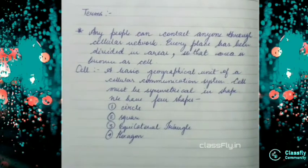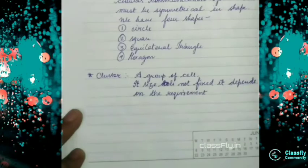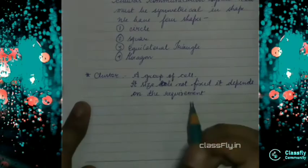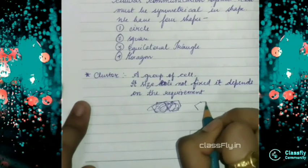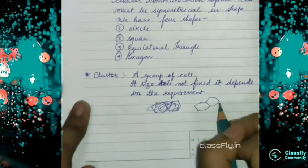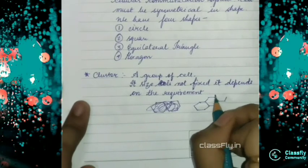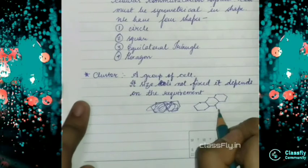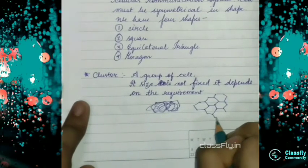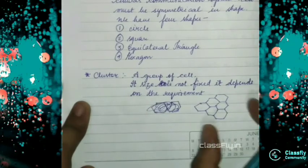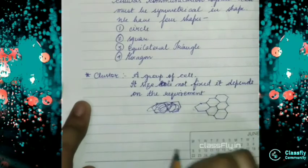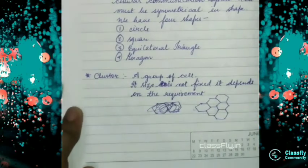Now we will move on to our next term which is cluster. Cluster means a group of cells. So it will be a group of cells. This one part is our cell. I hope you will understand three terms.